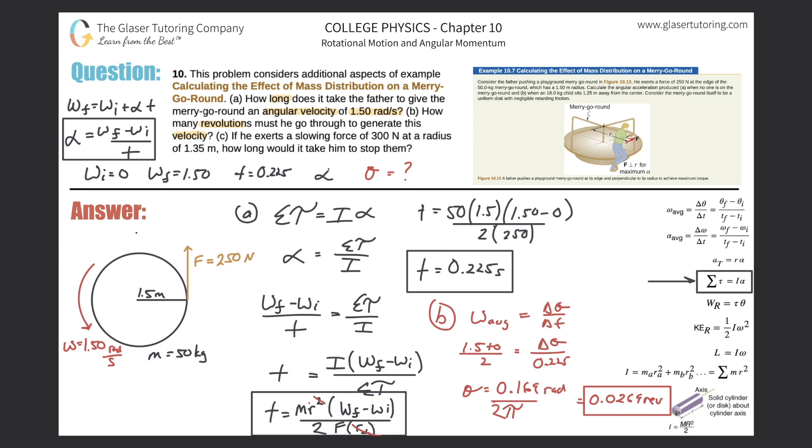Last but not least, letter C. If he exerts a slowing force of 300 newtons at a radius of 1.35 meters, how long would it take him to stop them? So now what we have to do is, I'm not going to solve the whole thing again. We have the formula over here. It's asking for how long. The one major difference here is, I'll write down letter C's formula on the bottom left. The one major difference is that, remember before,